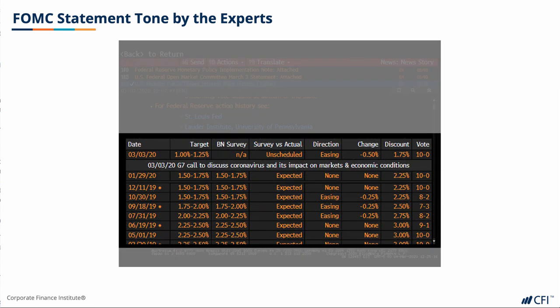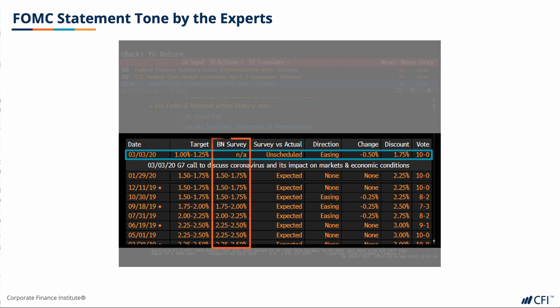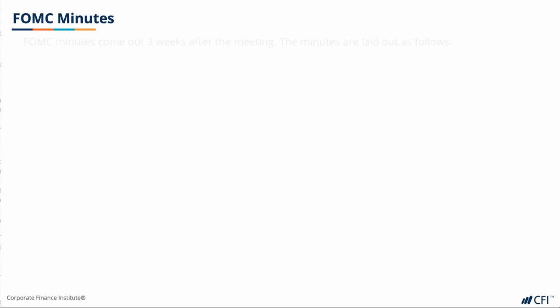We've talked extensively about our interpretation of the FOMC's tone. Given the importance of the statement, many experts obviously pay careful attention as well. Here we have a Bloomberg screen showing the last eight FOMC meetings and the results of each, including the unscheduled FOMC action on March 3rd as a result of COVID-19 infections globally. Bloomberg produces a survey of the experts' forecast of the Fed Funds target under the BN survey column. There generally don't tend to be many outliers as forecasters adjust their forecasts as consensus builds closer to the economic release date. There is also more commonality since the Fed pledged to increase transparency in the wake of the global financial crisis of 2007-2008. In addition to the actual policy decision, market watchers also pay careful attention to the release of the FOMC minutes that come out three weeks after the meeting.